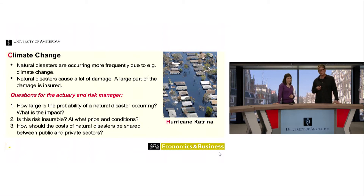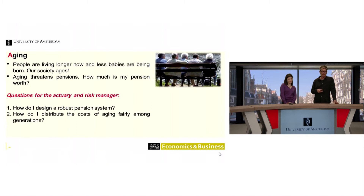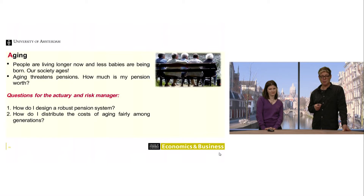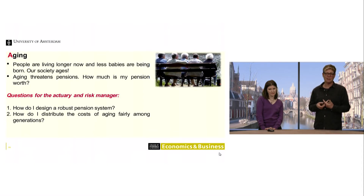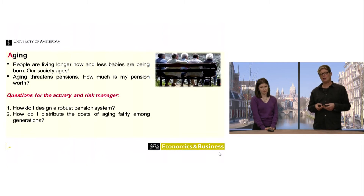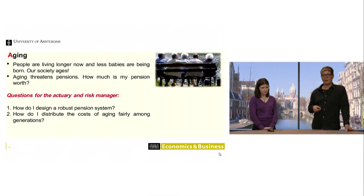The questions for an actuary and risk manager are: how do I design a robust pension system? If you give out all the money presently available, there won't be anything for future generations. These savings fluctuate in value, so how can we be sure we can pay out people when they're old? This is a very big issue for actuaries. You also find actuaries in financial markets because actuarial science is about risk management.